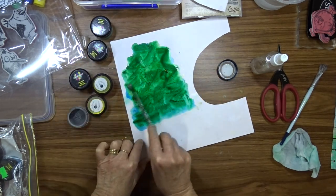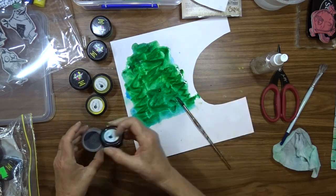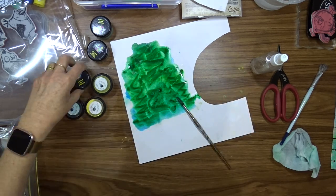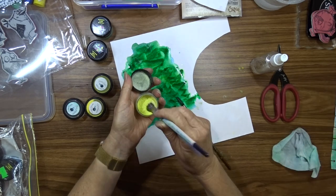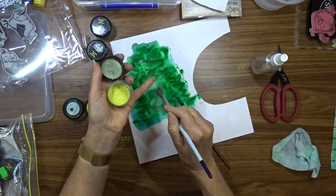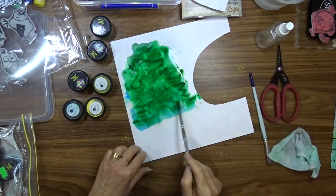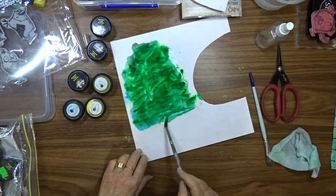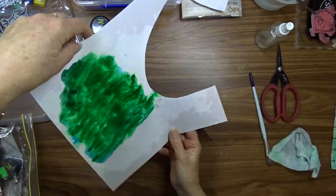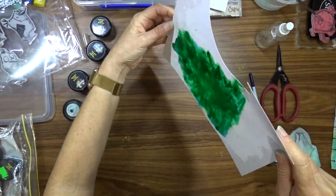I do a mixture of the colors that I said previously to try and get a bit of variation of colors in my tree. Some of them I sprinkle on and some of them I have to dip my brush into and sprinkle from the brush. Once I'm happy with the coloring I set that aside to dry.